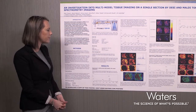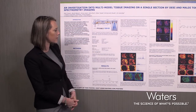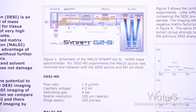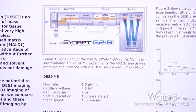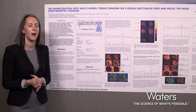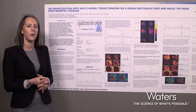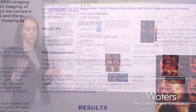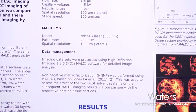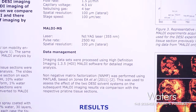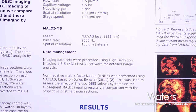So in this poster, the first experiment used 90% methanol. We had two consecutive tissue sections: one where we first did a DESI MS imaging experiment followed by a MALDI imaging experiment, and a second tissue section where we only did MALDI imaging. We then compared the MALDI datasets to see if they were comparable.